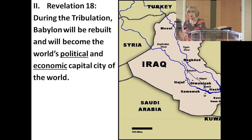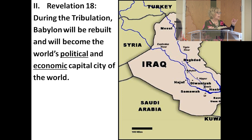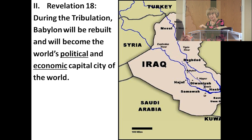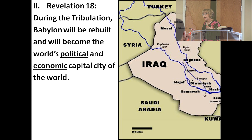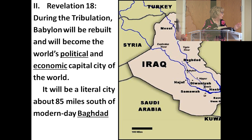Babylon will become the world's political and economic capital during the Tribulation — the Antichrist's capital city. For a while, Rome will have been the capital city of the Antichrist religion, then it moved to Jerusalem. We know the Antichrist religious capital moved to Jerusalem because he places his palace between the seas and puts his image in the temple in Jerusalem, requiring everyone to worship him. So we're going to see major cities during the Tribulation: Rome, Babylon, and Jerusalem — with literal Babylon about 85 miles south of modern-day Baghdad in Iraq.